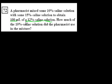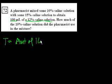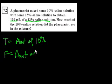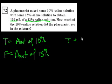Let T equal the amount of 10% solution, and F equal the amount of 15% solution. The amount of 10% solution plus the amount of 15% solution has to equal 100 milliliters.